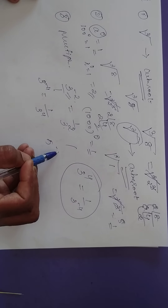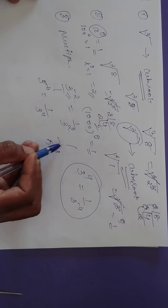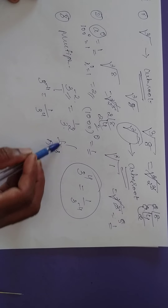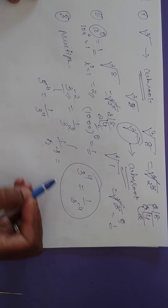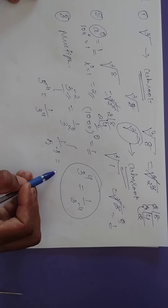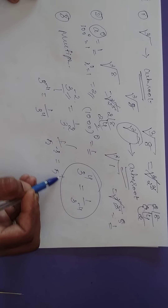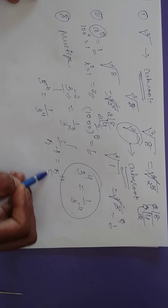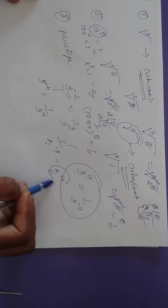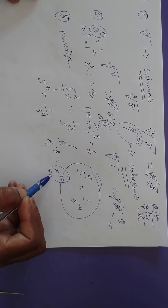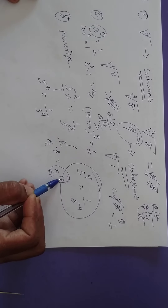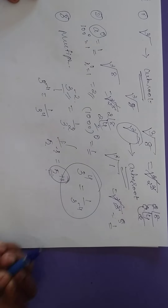For example, if it is 1 by 5 to the power of minus 3, what is the positive exponent? 5 to the power of plus 3. So you write this one into the numerator — it is 5 to the power of 3 by 1.